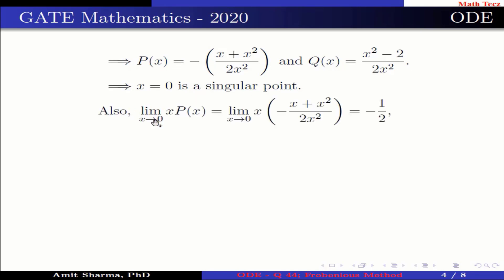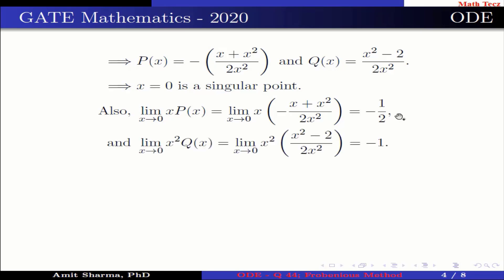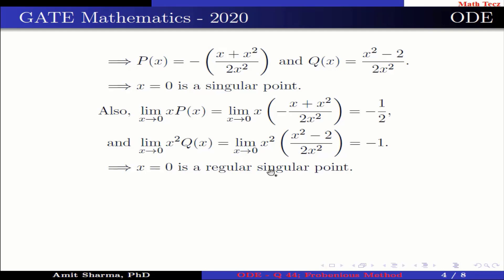Also, the limit as x → 0 of x·p(x) equals −1/2, and the limit as x → 0 of x²·q(x) equals −1. This implies x = 0 is a regular singular point.